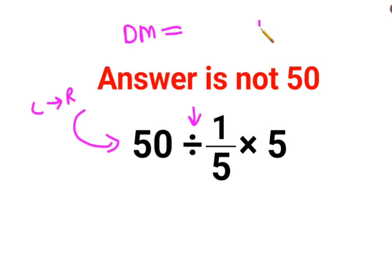So we have 50 divided by 1 upon 5. When you have division, you will follow the rule of KCF. K stands for keeping the first number as it is. C stands for changing the division sign to multiplication. And F stands for flipping or taking reciprocal of 1 upon 5 which is 5.